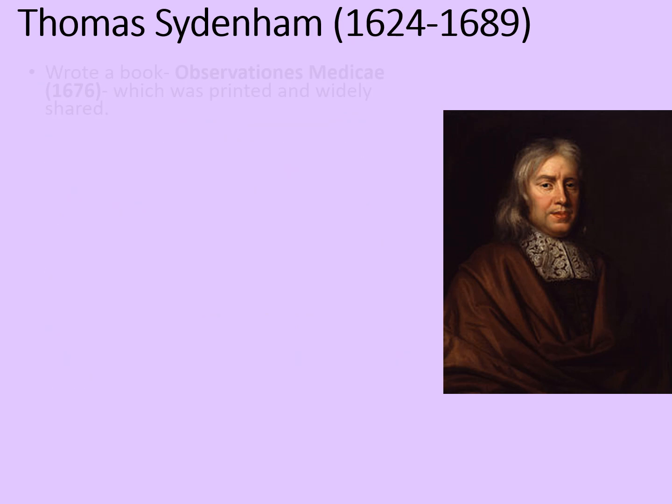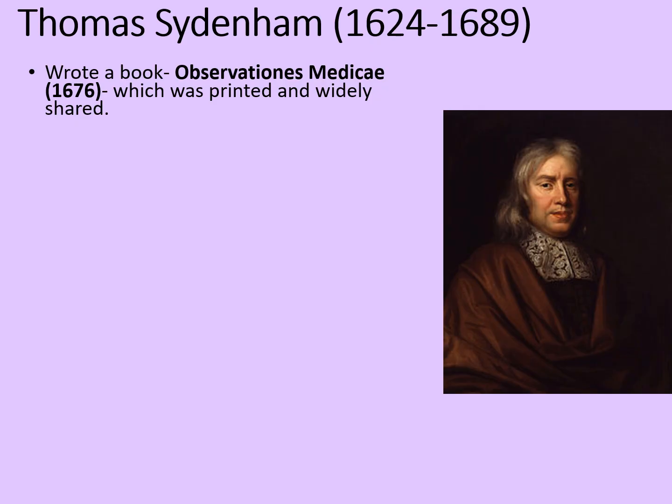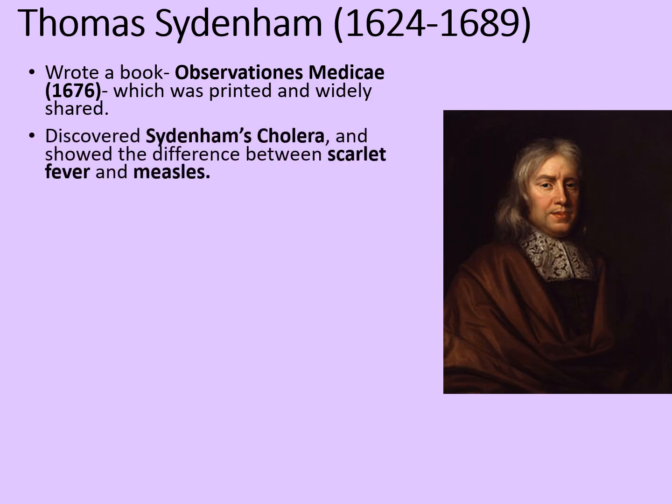Thomas Sydenham published his findings in Observations Medicae in 1676, which was printed and widely shared all over Europe in a variety of languages. He also discovered Sydenham's cholera, and showed the difference between scarlet fever and measles. This was important because scarlet fever and measles actually had outwardly quite similar symptoms. Previously, doctors had tried to treat the symptoms rather than the underlying disease, and Sydenham was able to demonstrate that each needed its own specific cure.